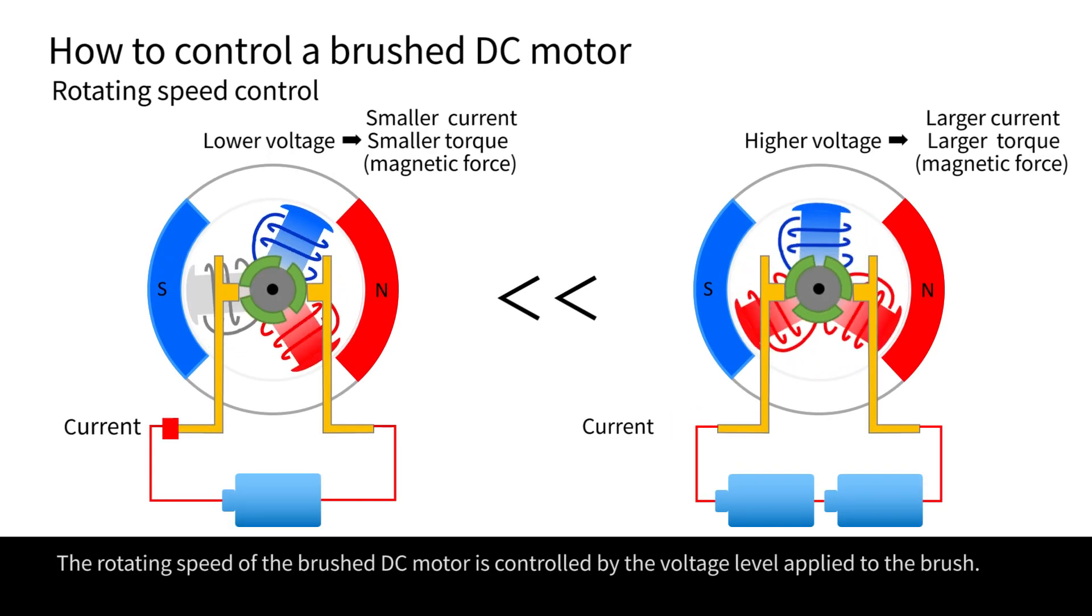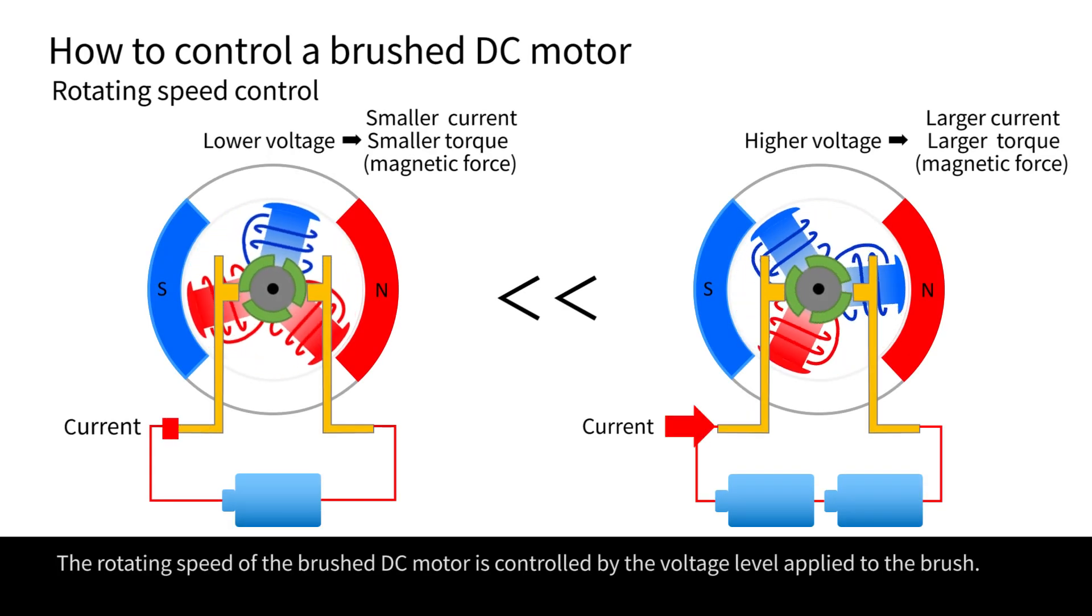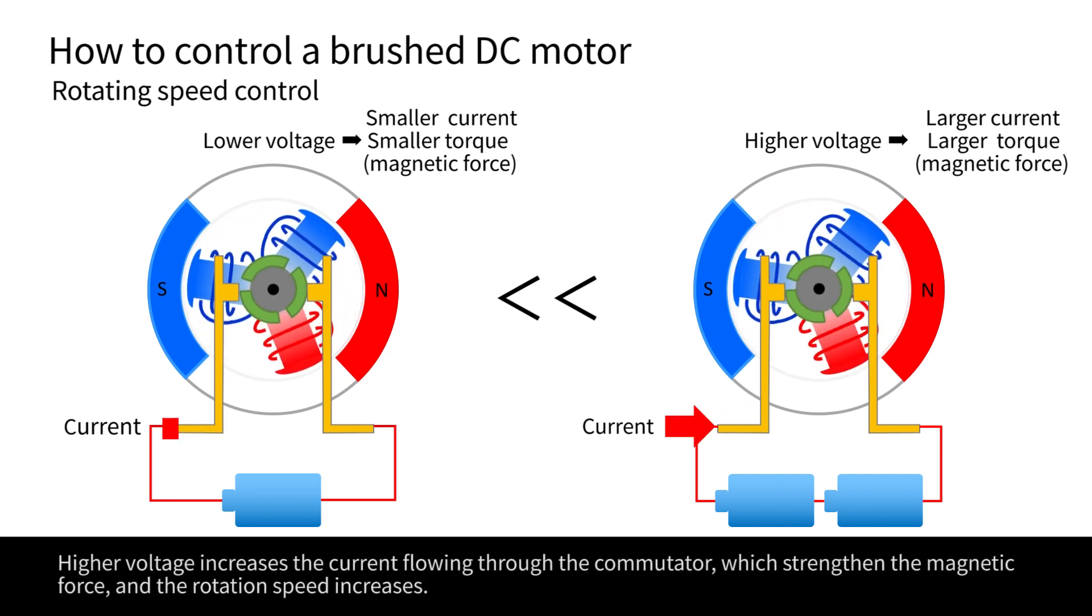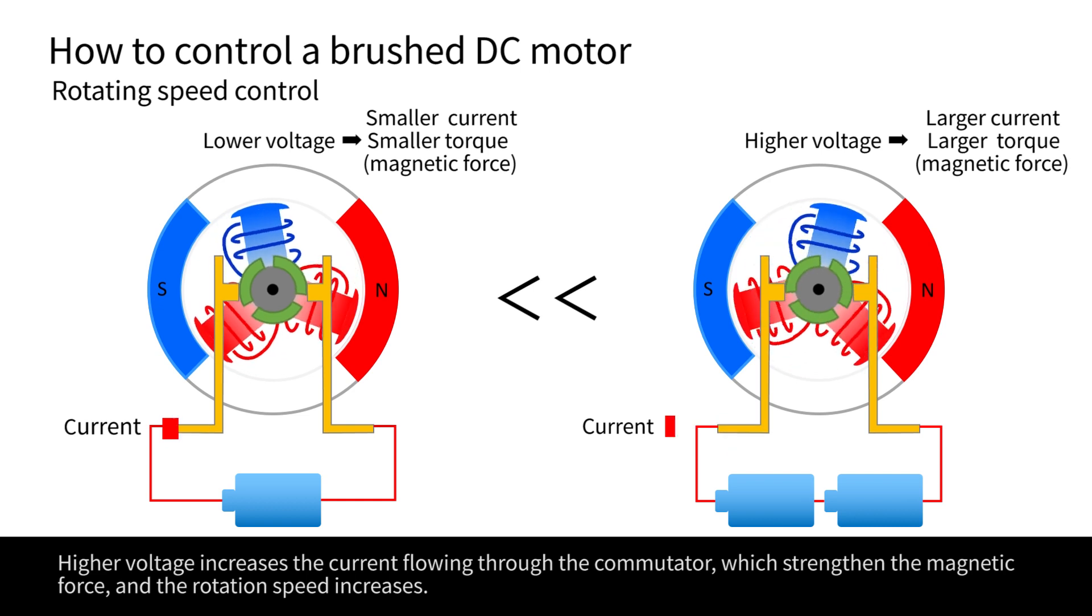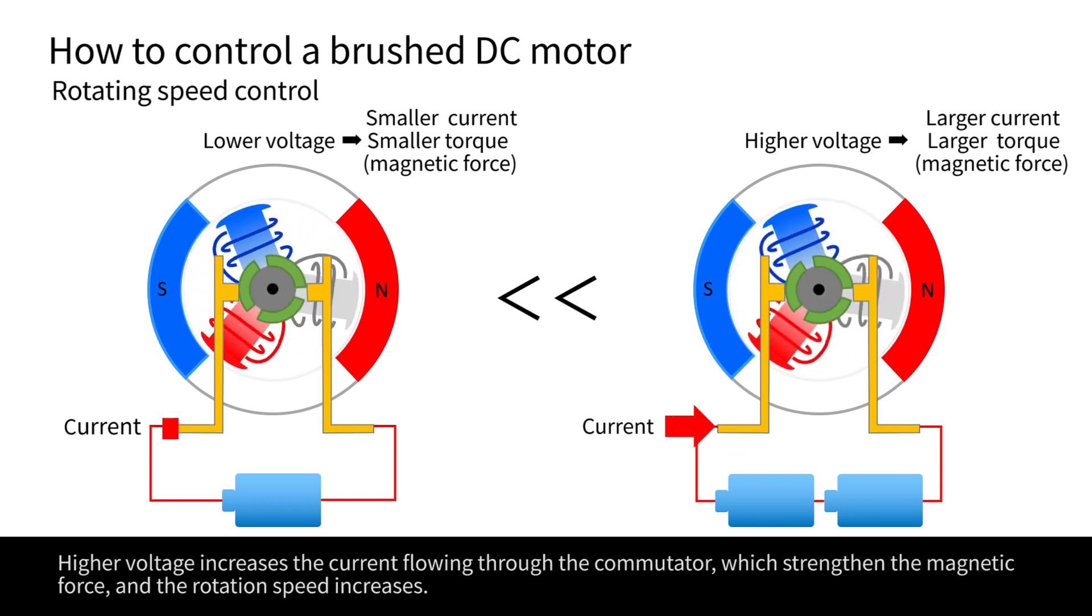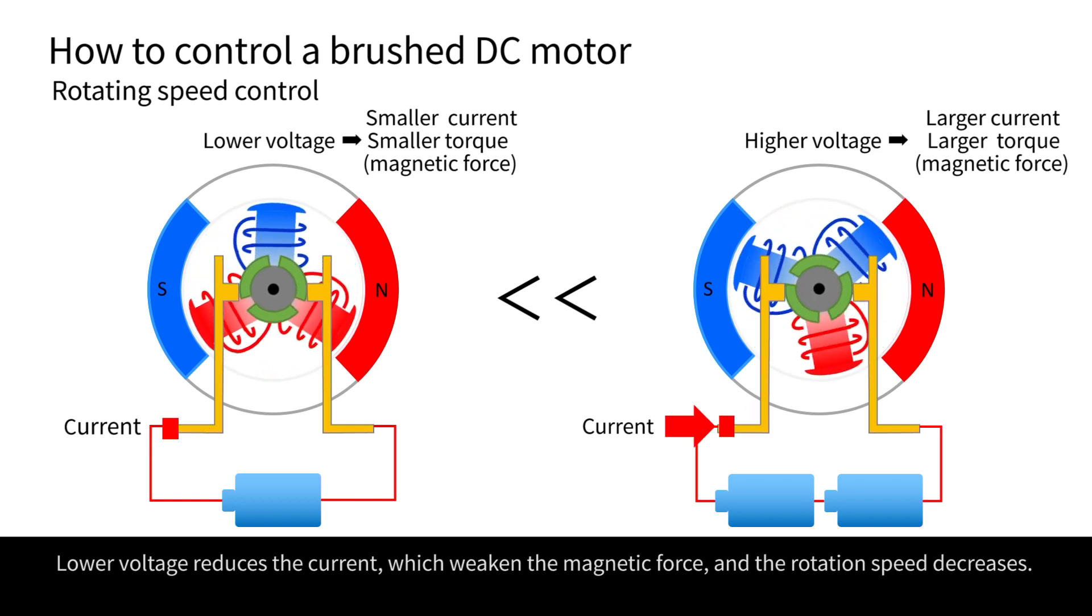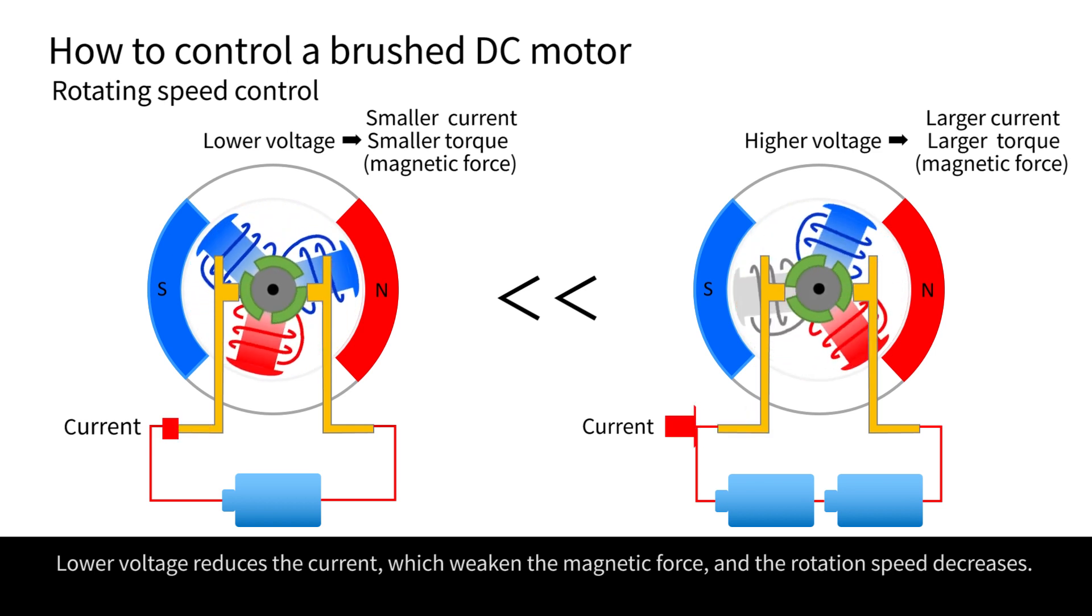The rotating speed of the brushed DC motor is controlled by the voltage level applied to the brush. Higher voltage increases the current flowing through the commutator, which strengthens the magnetic force, and the rotation speed increases. Lower voltage reduces the current, which weakens the magnetic force, and the rotation speed decreases.